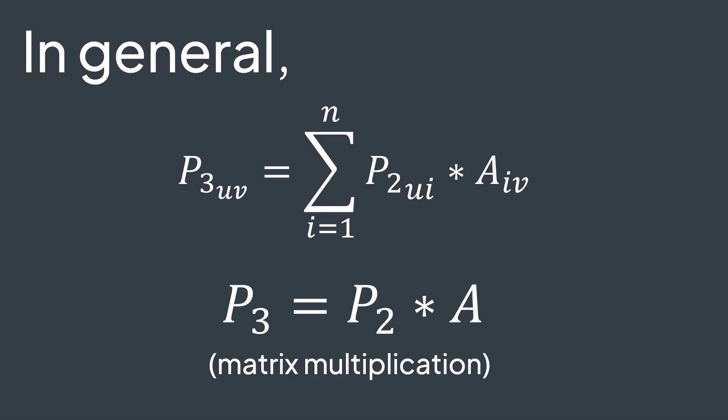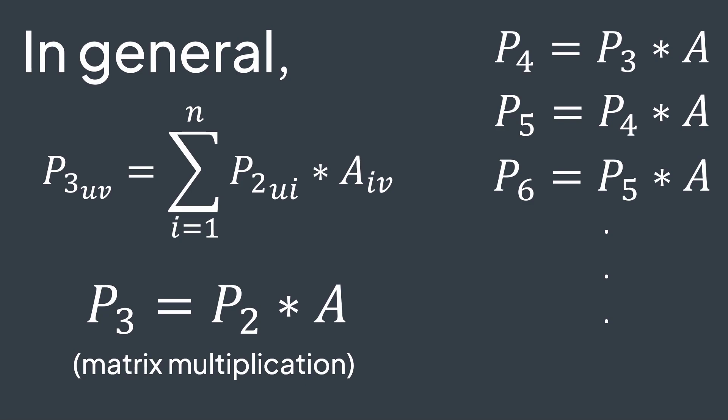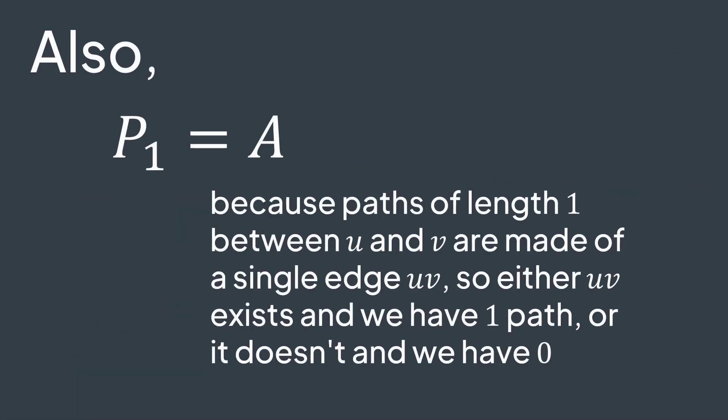In other words, to get paths of length 3, P3, we take P2 that we already have, and multiply it by A, the adjacency matrix. Then again, if we want P4, we just multiply P3 by A. And so on. Also, P1 is simply A, because paths of length 1 are made of a single edge. So we have one path of length 1 if there is an edge between i and j, and 0 otherwise. And we got our method.